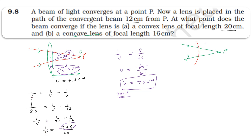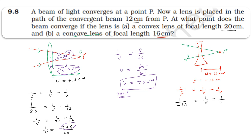For the concave lens, the lens is placed such that point P is where the beam converges, at a distance of 12 cm from the optical center. The object distance is plus 12 cm. The focal length of the concave lens is negative, so f = −16 cm. Applying the lens formula: 1/(−16) = 1/v − 1/12, so 1/v = 1/12 − 1/16. With LCM 48: 1/v = 4/48 − 3/48 = 1/48, so v = 48 cm.